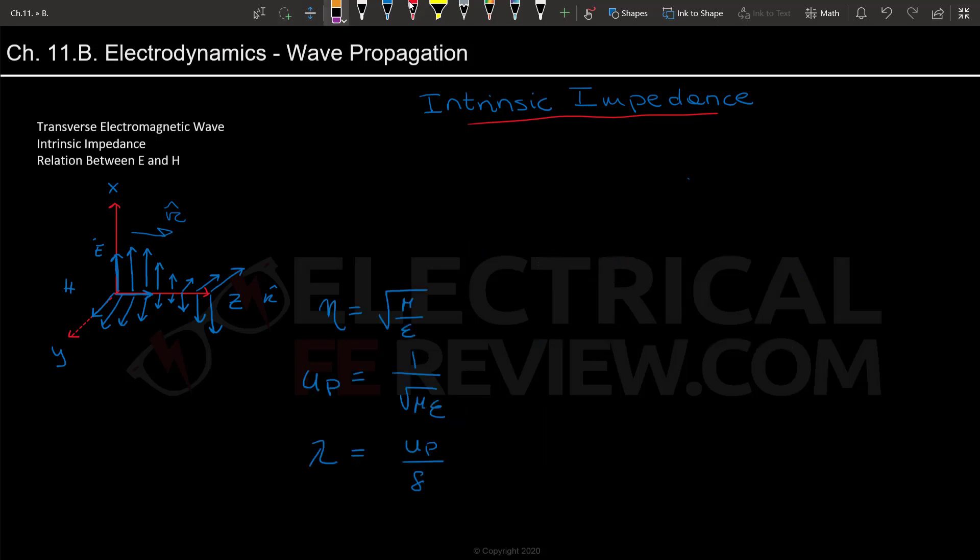Note how a problem can be formulated for you to find the wavelength of a transverse wave by only giving you mu and epsilon. So just think about how a problem like that could be solved. Now let's go over a relation between the electric and magnetic fields.